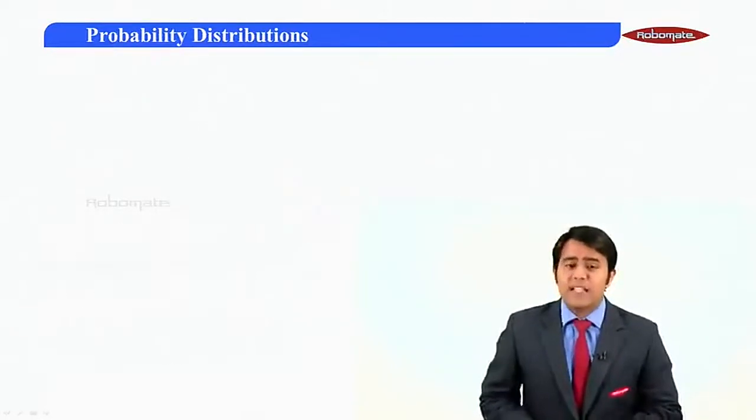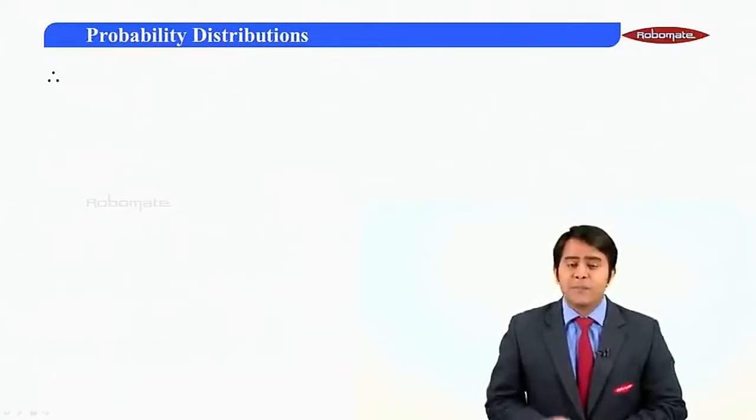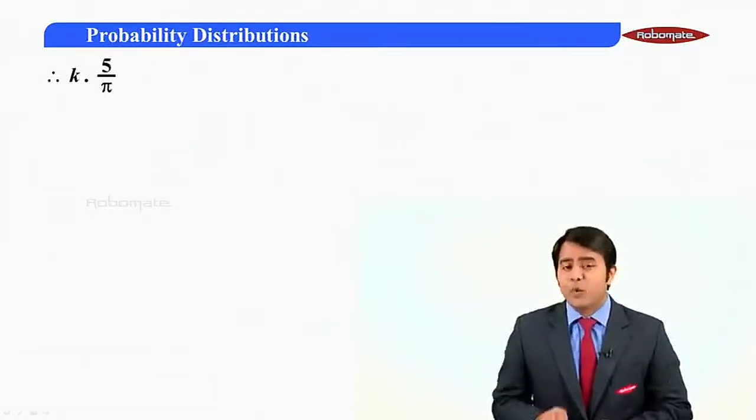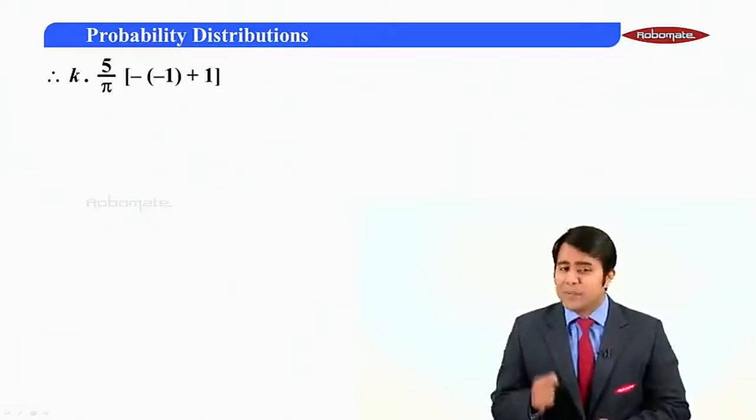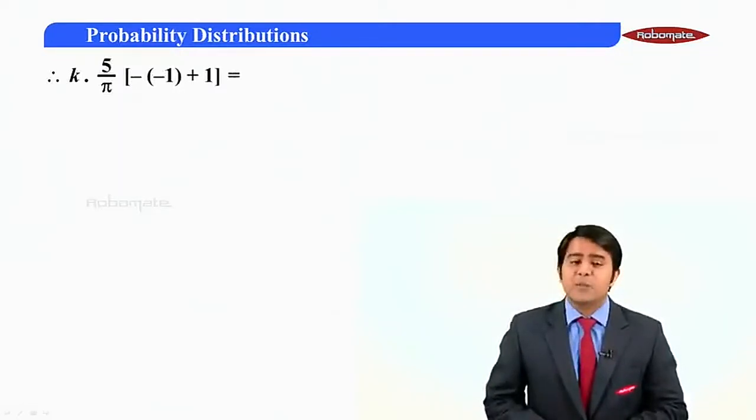Cos pi is minus 1 and cos 0 we all know that it is 1. Substituting this value here, we will get the value as k into phi by pi into minus of minus 1 plus 1. This is equal to 1.